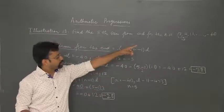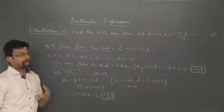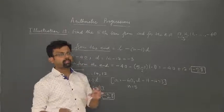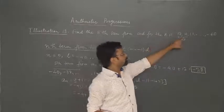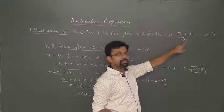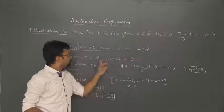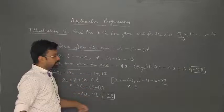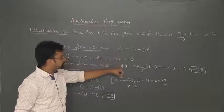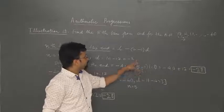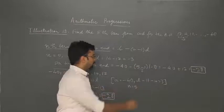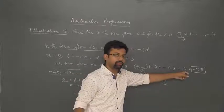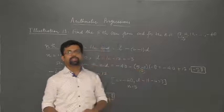The last term for the given AP is minus 40. N is 5 because we have to find the fifth term from the end. The common difference is 14 minus 17 equal to minus 3. Substituting the values: L minus (N minus 1) into D equals minus 40 minus (5 minus 1) into minus 3. That gives minus 40 minus 4 into minus 3, which equals minus 40 plus 12, giving us minus 28.